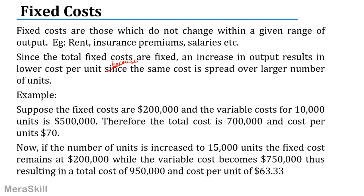The cost per unit is 63.33. For 10,000 units the variable cost is 500,000; for 15,000 units it is 750,000, plus 200,000 fixed cost gives 950,000 total, and cost per unit is 63.33. The variable cost per unit remains the same, but the fixed cost per unit falls, so the total cost per unit comes down.